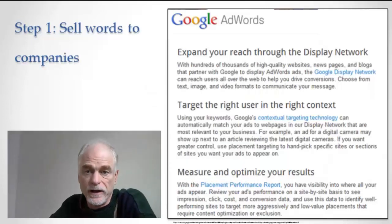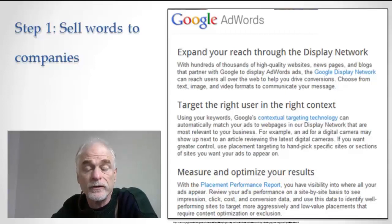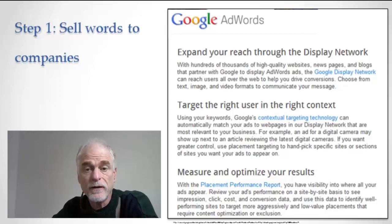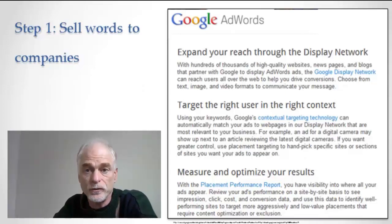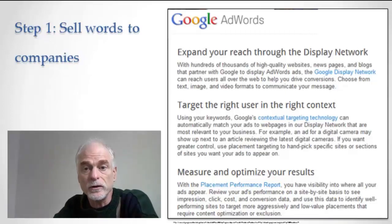We've looked at Google's positioning of their ad service, now let's look at how it actually works. It has really a few different components, and the first component is to sell words from the index to advertisers — to companies who want to be associated with that word. We won't go too technically into it, but you get the basic idea. The Google index is certainly hundreds of thousands to millions of distinct words.